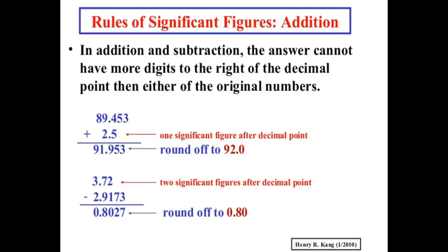Take for example 89.453 plus 2.5. Since 2.5 only has one significant figure after the decimal point, you must round the answer 91.953 to 92.0.